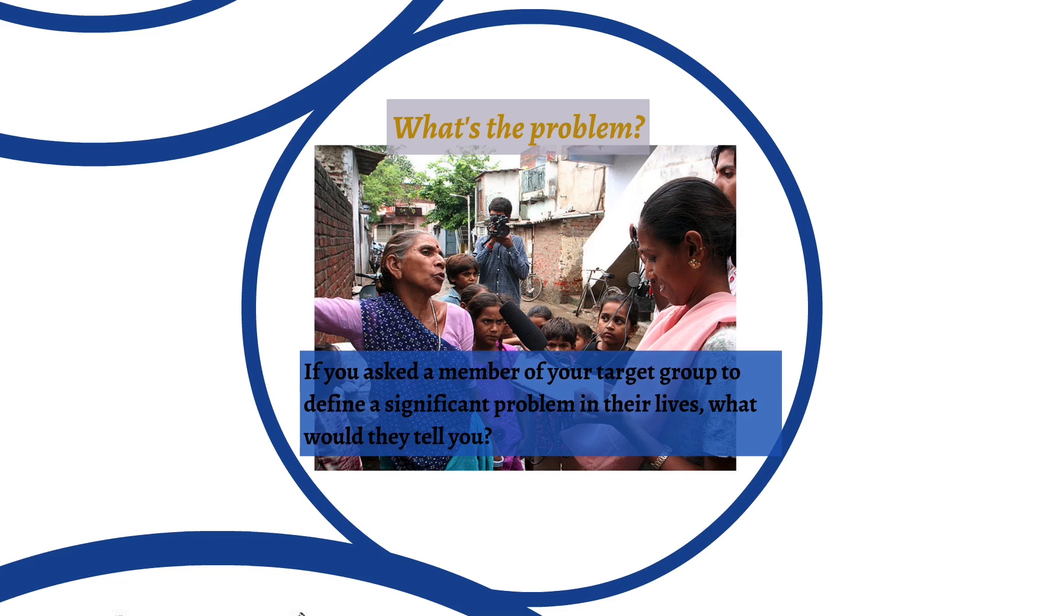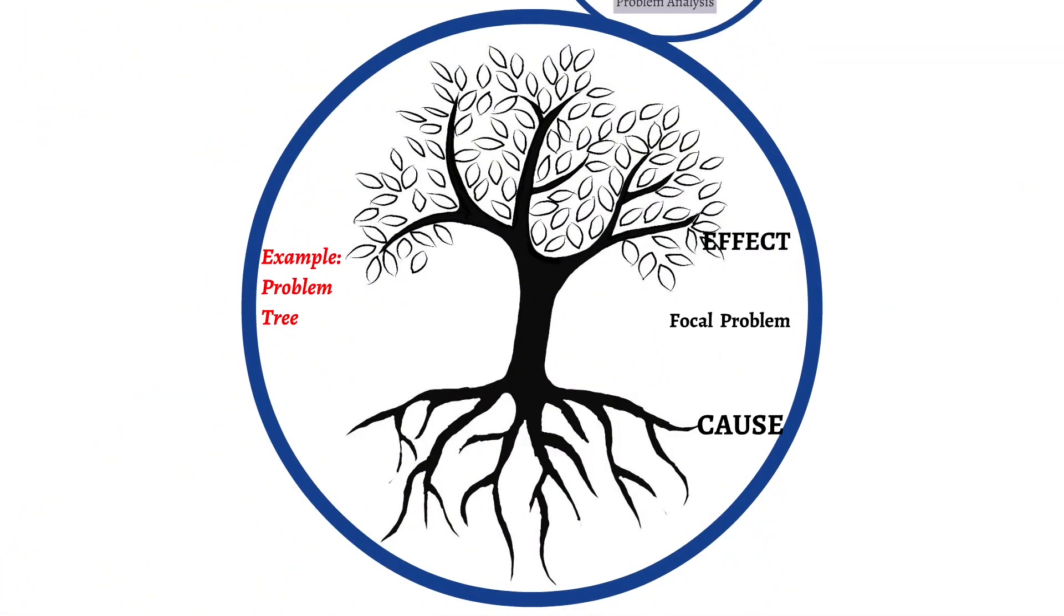So let's have a look at that. What is the problem? If you asked a member of your target group to define a significant problem in their lives, what would they tell you? In their own words and from their point of view, the answer to this question is going to form the basis of your problem analysis. And it's going to be the seed or the focal problem from which will grow this problem tree. Now the problem tree is a tool you can use with your planning team to discuss the really complex network of cause and effect that surrounds every problem. Causes form the roots of the problems. Effects are the things that flow out of the problems. And the focal problem itself is the trunk of the tree or the center.